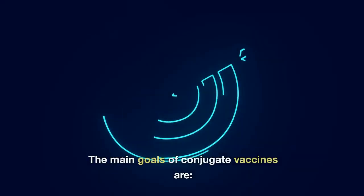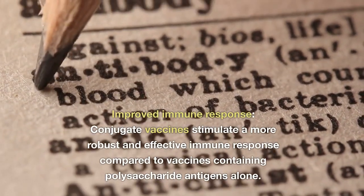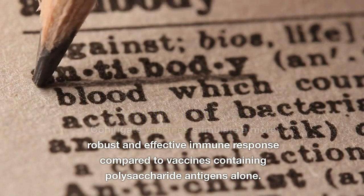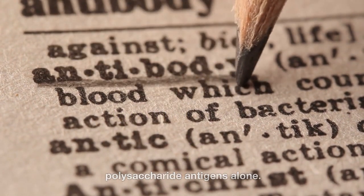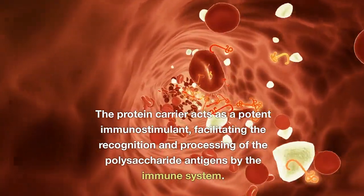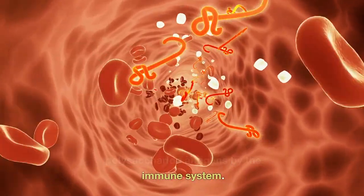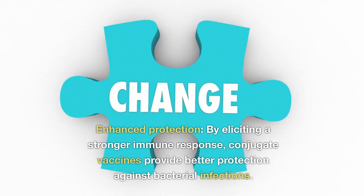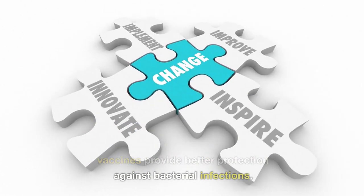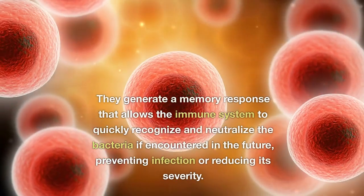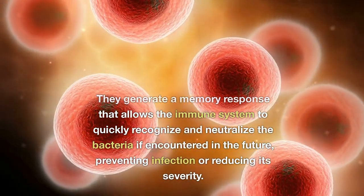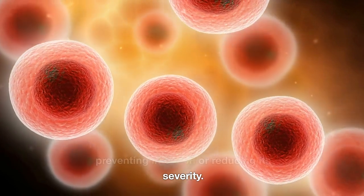The main goals of conjugate vaccines are: improved immune response — conjugate vaccines stimulate a more robust and effective immune response compared to vaccines containing polysaccharide antigens alone. The protein carrier acts as a potent immunostimulant, facilitating the recognition and processing of the polysaccharide antigens by the immune system. Enhanced protection — by eliciting a stronger immune response, conjugate vaccines provide better protection against bacterial infections. They generate a memory response that allows the immune system to quickly recognize and neutralize the bacteria if encountered in the future, preventing infection or reducing its severity.